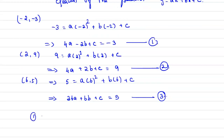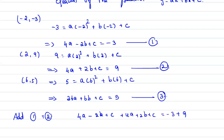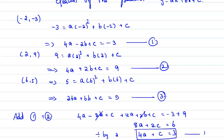By adding equations 1 and 2: (4a - 2b + c) + (4a + 2b + c) = -3 + 9. The -2b and +2b cancel, giving 8a + 2c = 6. Dividing by 2 gives 4a + c = 3. Mark this as equation 4.